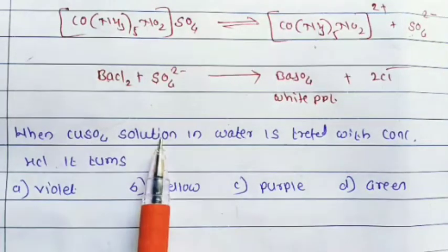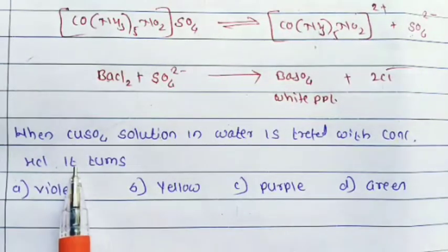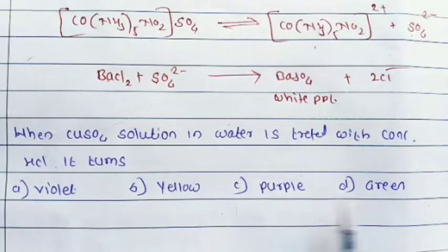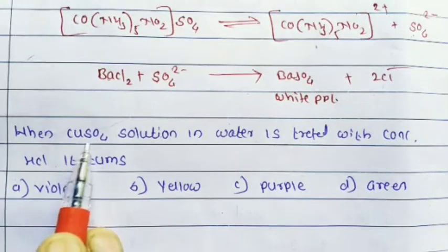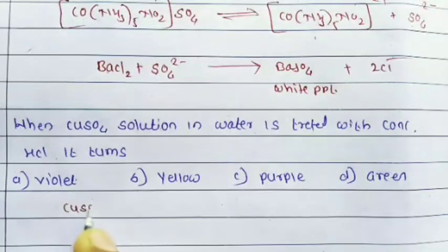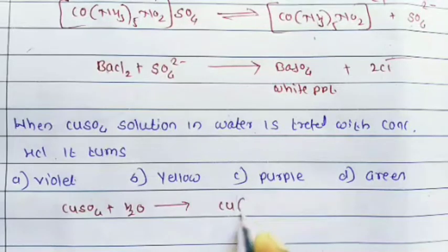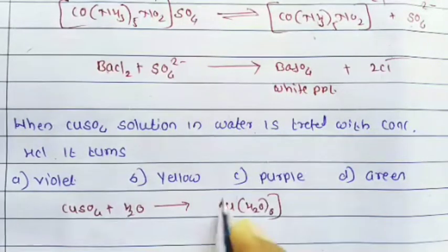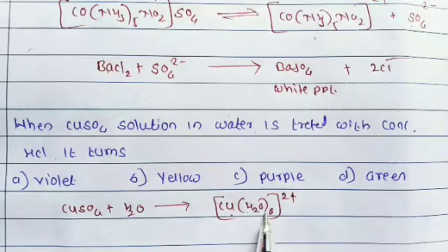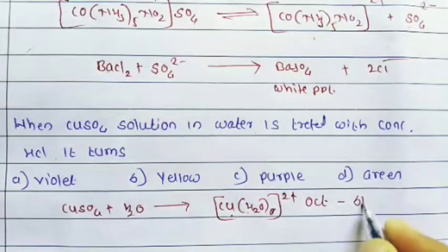Second question: when CuSO₄ solution in water is treated with concentrated HCl, it turns violet, yellow, purple, or green? CuSO₄ in water forms [Cu(H₂O)₆]²⁺ ions — an octahedral complex — giving a blue colored solution.